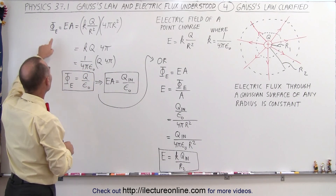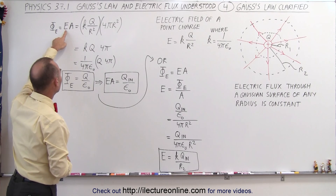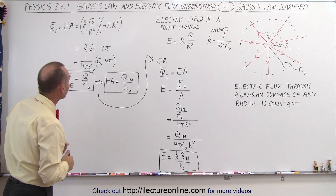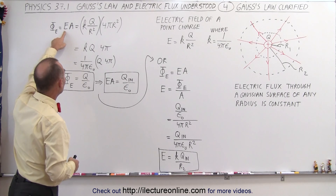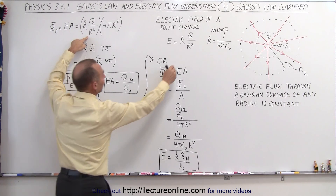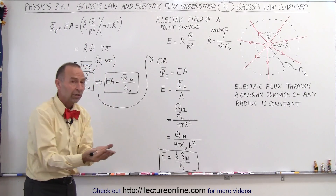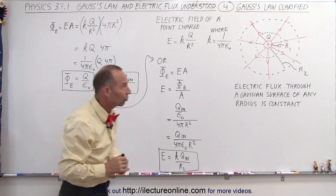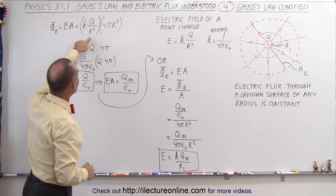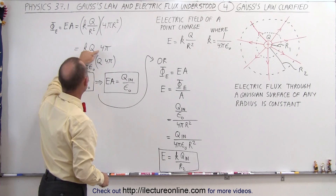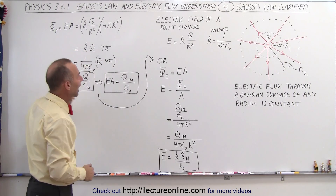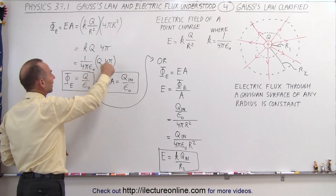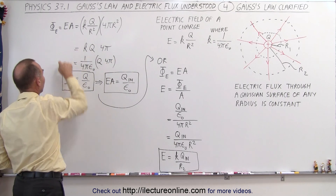Now, let's go back to the concept of electric flux. It's the product of the magnitude of the electric field times the area of a surface through which the flux passes. If we take the electric field and define it as KQ over R squared, and the area of the sphere as 4πR squared — where R is the radius of the Gaussian surface — we can see that the R-squared terms cancel, leaving us with KQ times 4π.